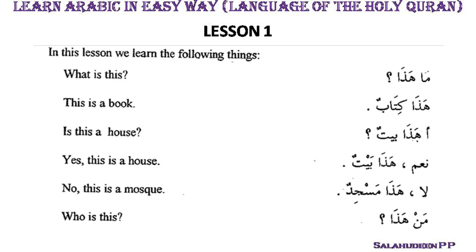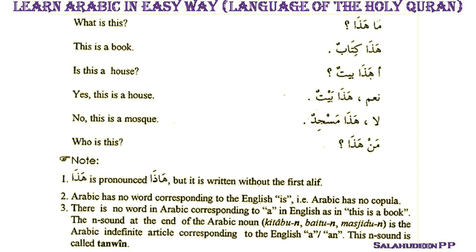The first thing is the word 'hada' — it is pronounced as 'hadha' but it is written without the first alif. So it is written 'hada' but we must pronounce it as 'hadha'. The second thing is that Arabic has no word corresponding to the English 'is'. For example, 'hadha kitabun' translates as 'this is a book', but in Arabic 'hadha' means 'this' and 'kitab' means 'book' — there is no word for 'is'.